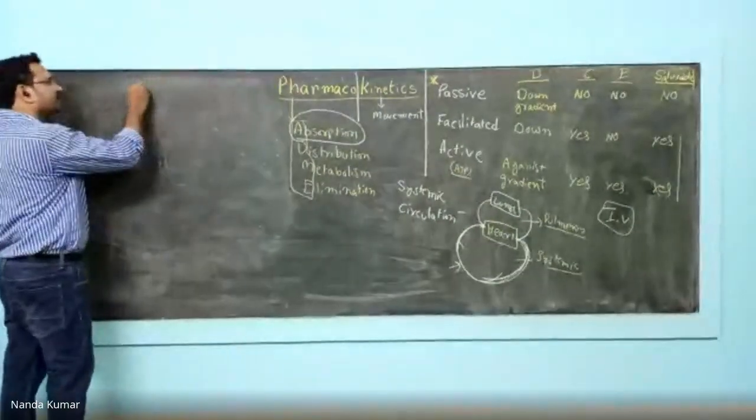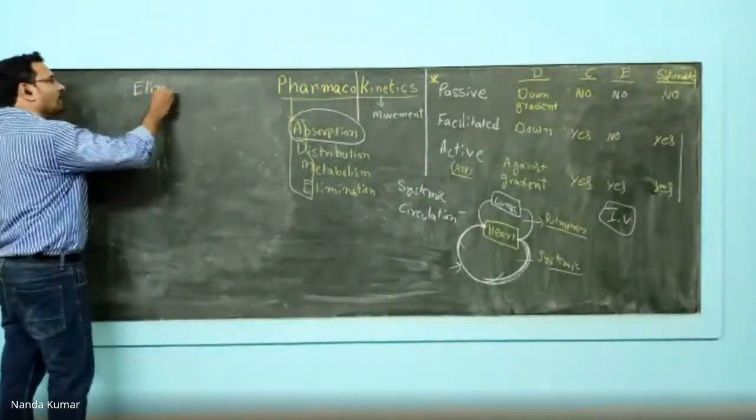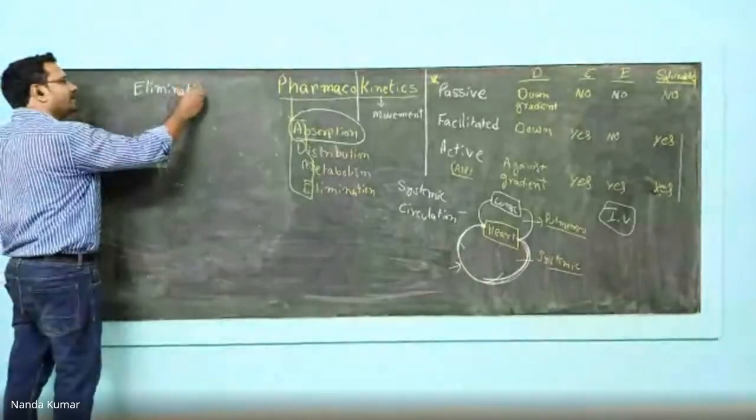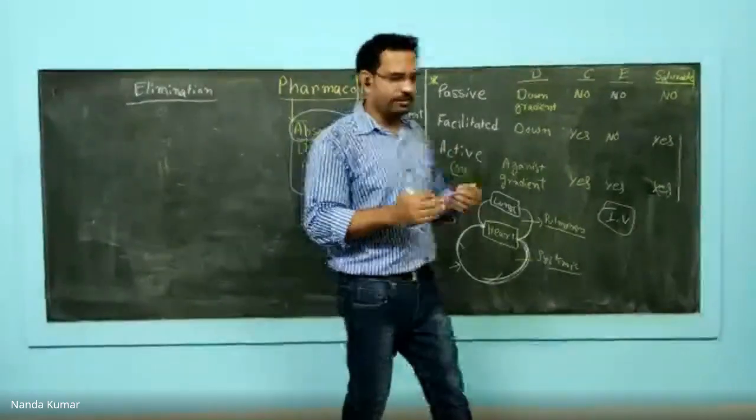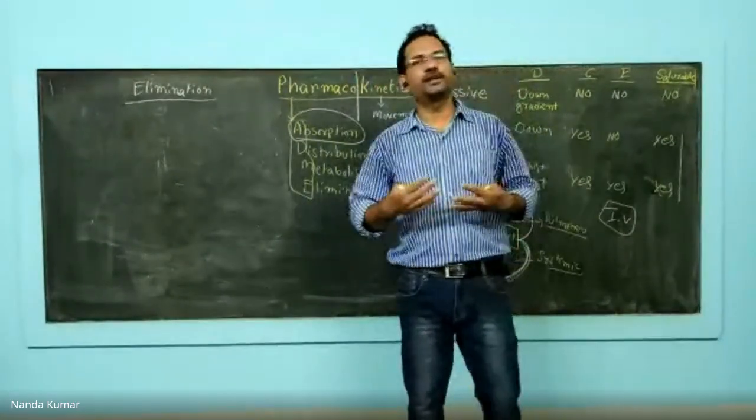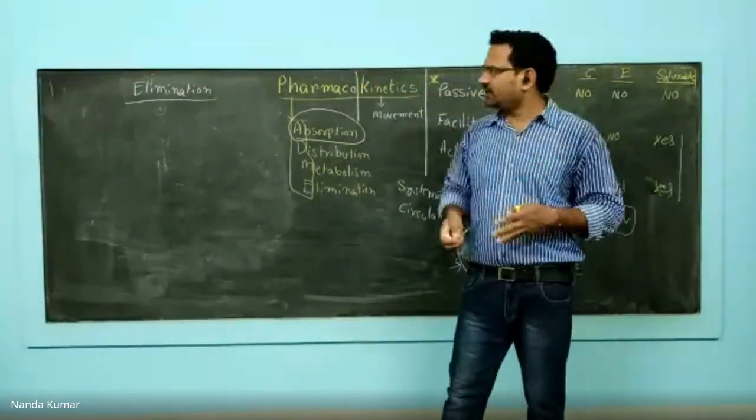The last phase is elimination. All drugs need to get eliminated because they are xenobiotic, and the major eliminating organ is the kidney in human beings. These drugs will get eliminated through the kidney.